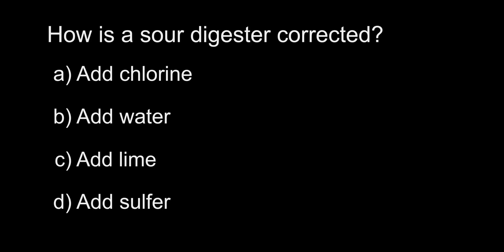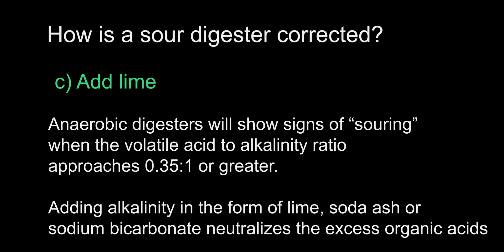How is a sour digester corrected? A. Add chlorine, B. Add water, C. Add lime, D. Add sulfur. The answer is C, add lime. One of the most important factors when operating a digester is watching the volatile acid to alkalinity ratio — monitoring the buffering capacity, which represents the ability of a digester to neutralize the acids formed during digestion. You will see a change in the volatile acid to alkalinity ratio before you see a change in pH. Adding lime increases the alkalinity and buffering capacity, helping keep your pH stable. I encourage you to learn more about digesters, as there will certainly be other questions regarding them on your exam.